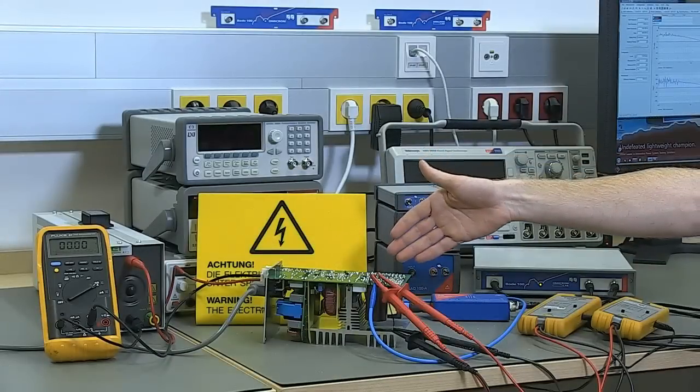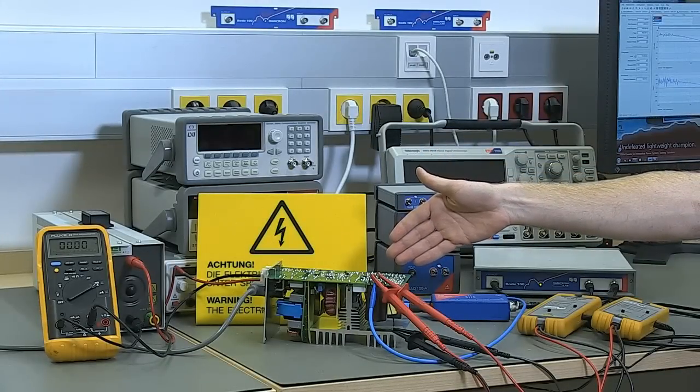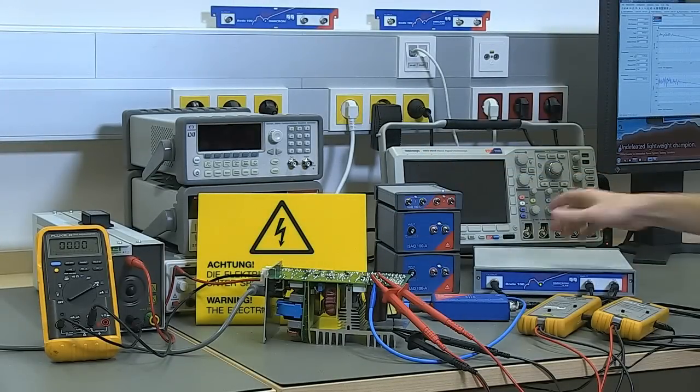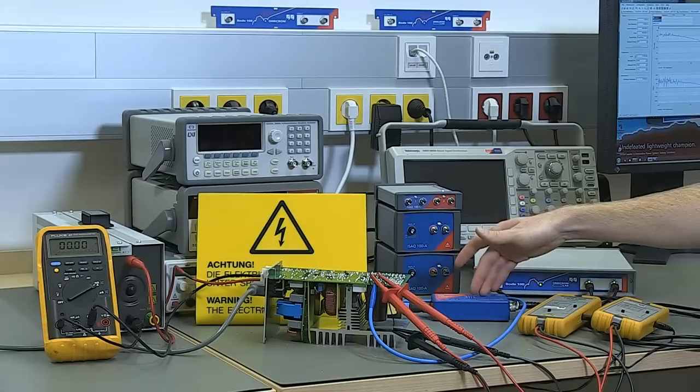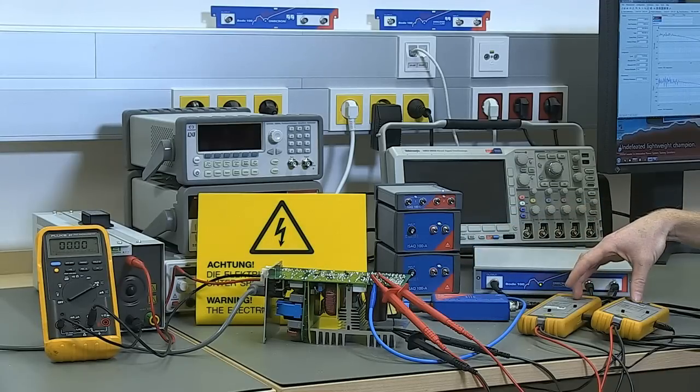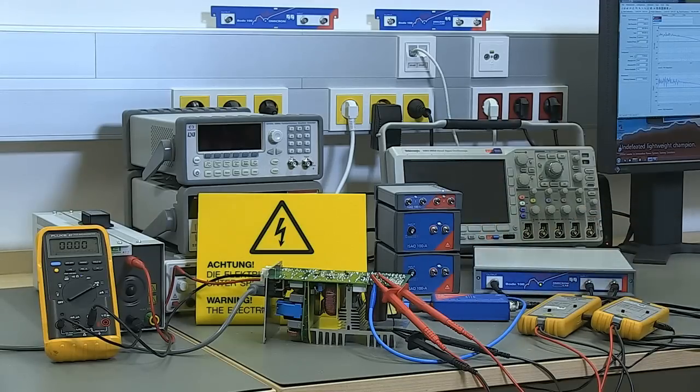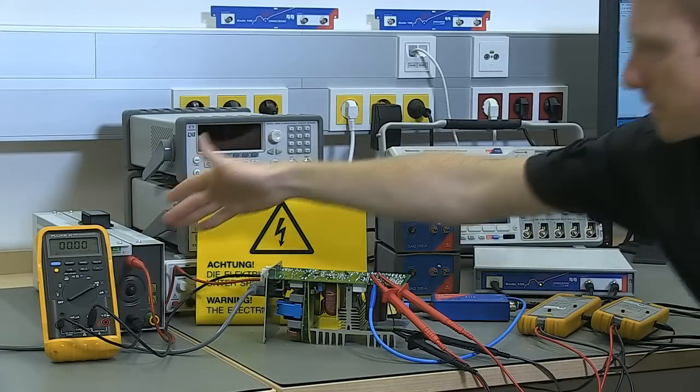This is our power supply containing a power factor correction circuit. We have connected the Bode 100 using the BVT 100 and two high voltage differential probes to the circuit. The circuit is loaded using a load resistor.